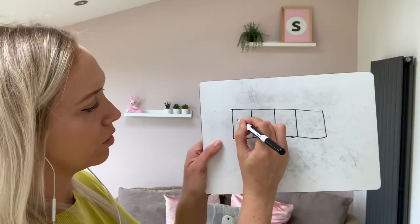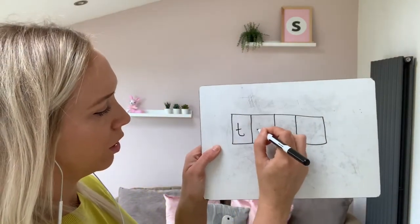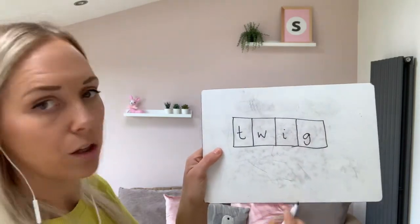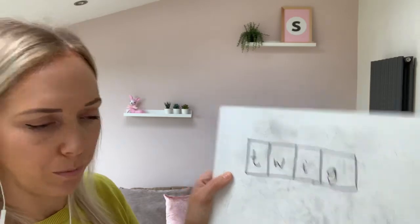And the last one we're going to do is twig. I'll say twig. Can you segment it? Say it, segment it. Twig. Those two consonants are at the start — can you separate them? Twig. Well done. Twig.